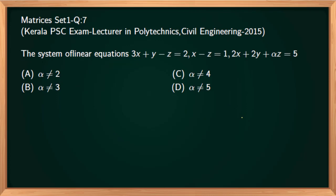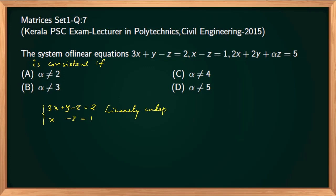Next question: the system of linear equations 3x plus y minus z equal to 2, x minus z equal to 1, 2x plus 2y plus αz equal to 5 is consistent if which condition holds? Options: A) α ≠ 2, B) α ≠ 3, C) α ≠ 4, D) α ≠ 5. The first two equations are linearly independent. We derive another equation using their linear combinations.